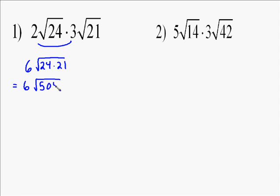To simplify using the perfect squares, we need to do that multiplication of 24 times 21. 24 times 21 is 504, so now we need to simplify 504.